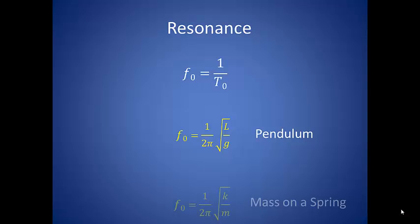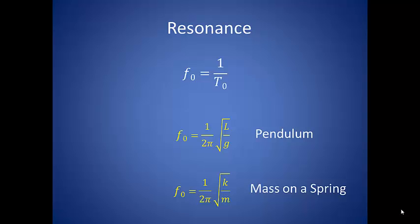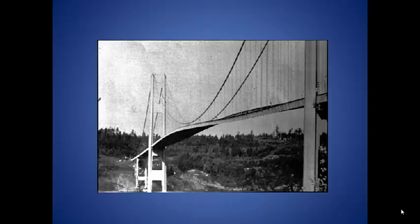Now, if we have a mass on a spring instead of a pendulum, we could also substitute in the square root of K over M. One famous example of the results of resonant motion is the Tacoma Narrows Bridge. In 1940, winds drove the bridge into oscillations at its resonant frequency. Eventually, the support broke free, allowing the oscillations to increase in amplitude until it finally collapsed.